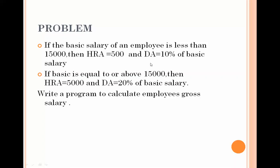The second condition is: if the basic salary is greater than or equal to 15,000, then HRA will be 5,000 and DA will be 20% of the basic salary. As we know, gross salary equals basic salary plus HRA plus DA. We need to decide HRA and DA based on whether the basic salary is less than 15,000 or greater than or equal to 15,000, so we will use the if-else control structure.